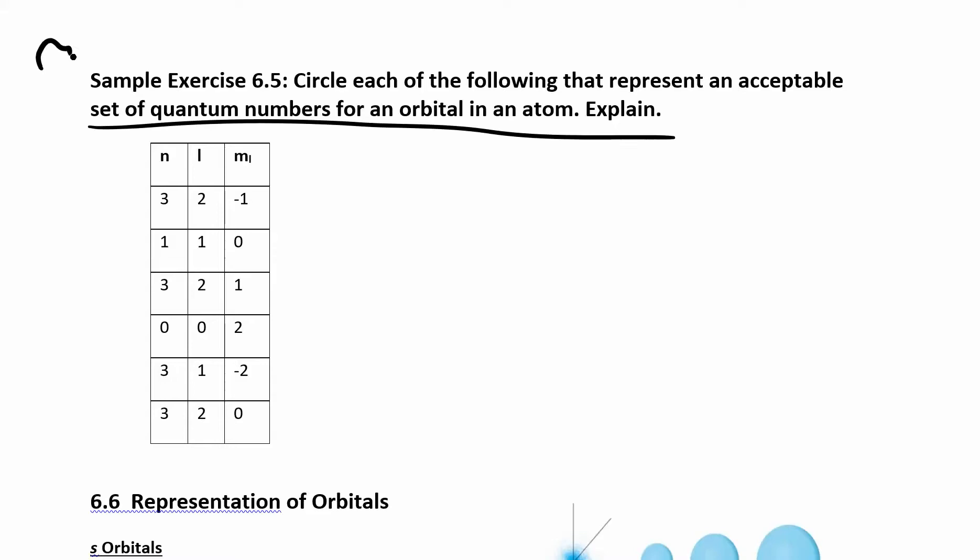So n has to be 1 or greater. So it starts at 1 and can go on. L is related to n. So l can be 0 all the way up to n minus 1. So if you ever find an n and an l that have the same number, that cannot be an acceptable set of quantum numbers. And then the rules about ml, ml can range from negative l through 0 all the way up to positive l.